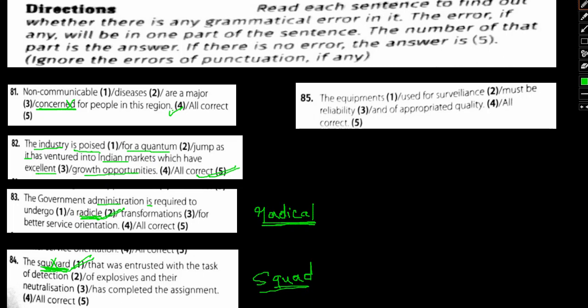Now let's look at the last one. The equipments used for surveillance must be reliability. Reliability is wrong here. It should be reliable, should be reliable. So option 3 is the wrong one.